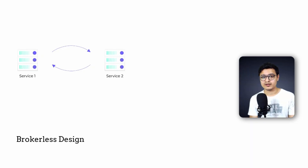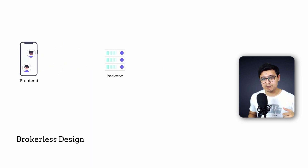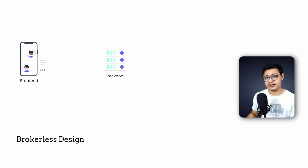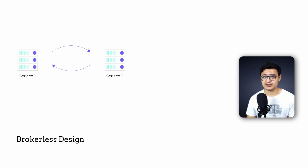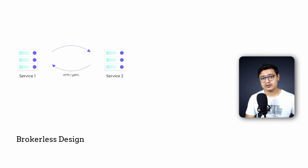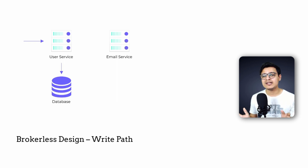Let's start with the brokerless design. Here, all microservices talk to each other directly via APIs — the same as how the front-end and back-end talk, where the back-end team provides an API or contract that the front-end team can invoke whenever needed. The only difference is that instead of front-end and back-end, we have microservices talking to each other using things like HTTP or gRPC. The write path is exactly how you'd expect: the user service gets a sign-up request, adds a user in the database, and then calls an API on the email service to send out a welcome email.